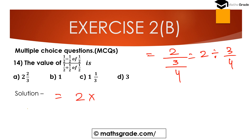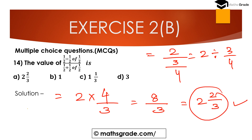Now we have 1/2 ÷ (3/4). Dividing by 3/4 means multiplying by its reciprocal, which is 4/3. So 2 × 4 = 8, giving 8/3. Converting this improper fraction to a mixed number: 3 × 2 = 6, and 6 + 2 = 8, so the answer is 2 and 2/3. Option A, 2⅔, is the correct answer. The value of the expression is 2⅔.